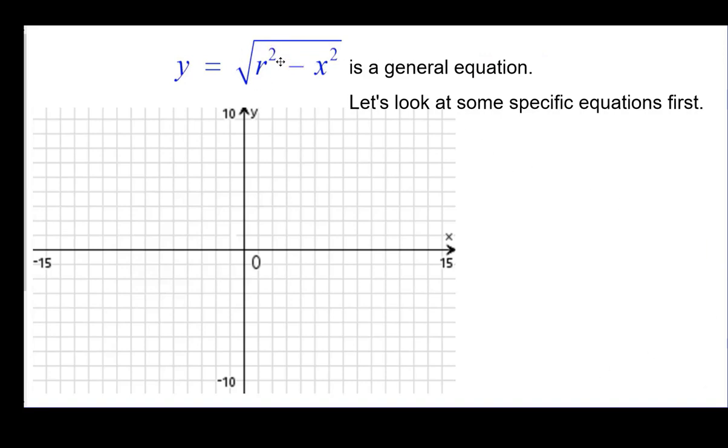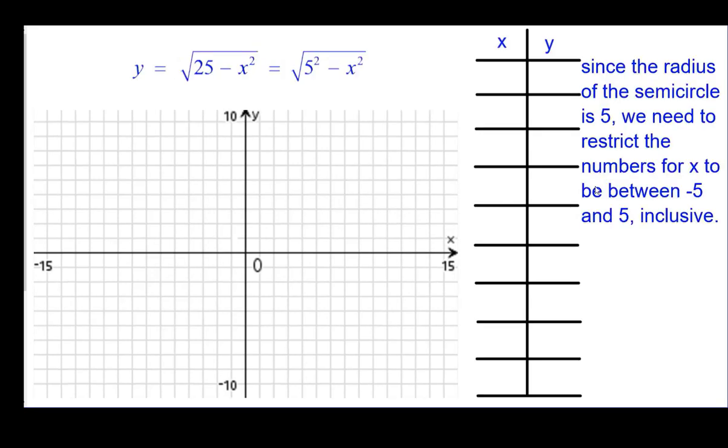So this is a general equation for any number r, so we're going to look at a specific value. We're going to start with r being equal to 5. And so we're going to look at the positive square root of the quantity 25 minus x squared. So since the radius is 5, we have to keep our numbers between 5 and negative 5 inclusive. And you may say why?